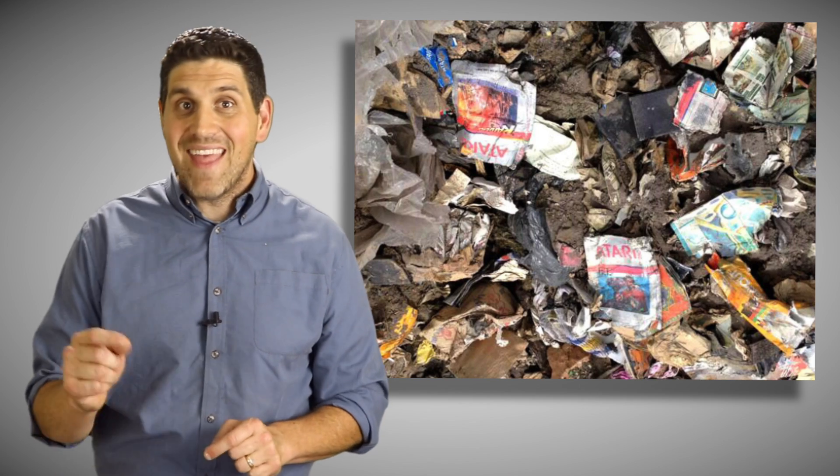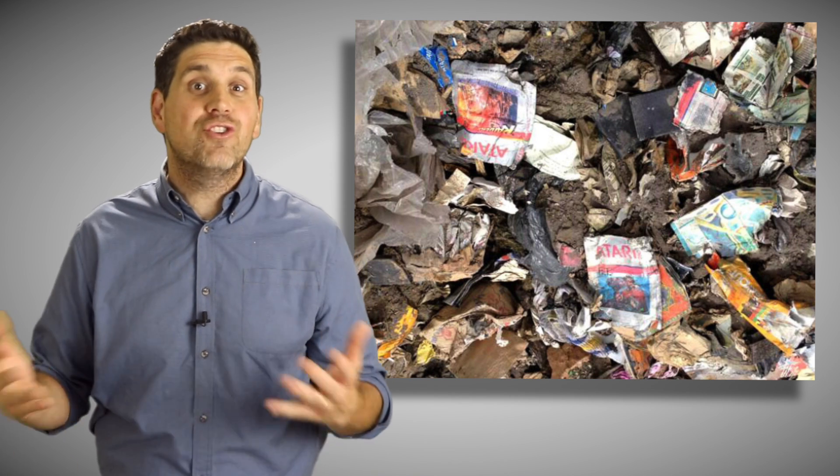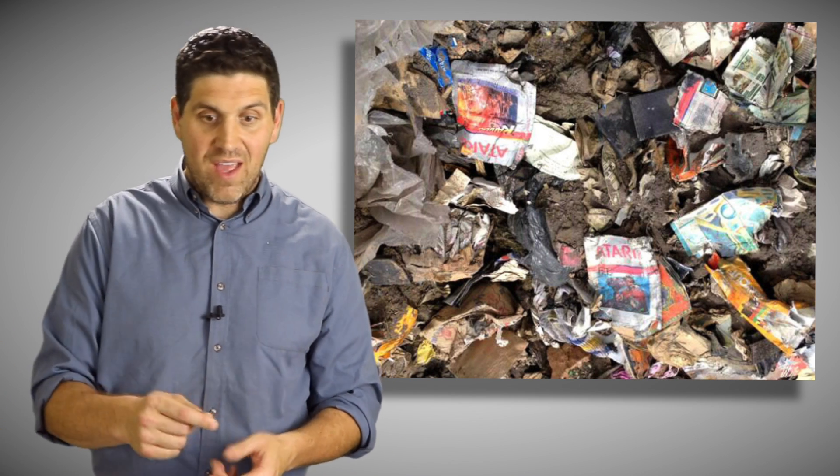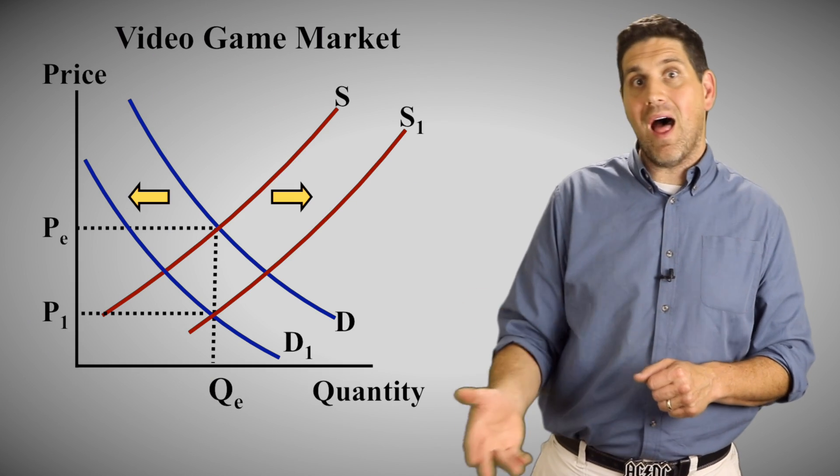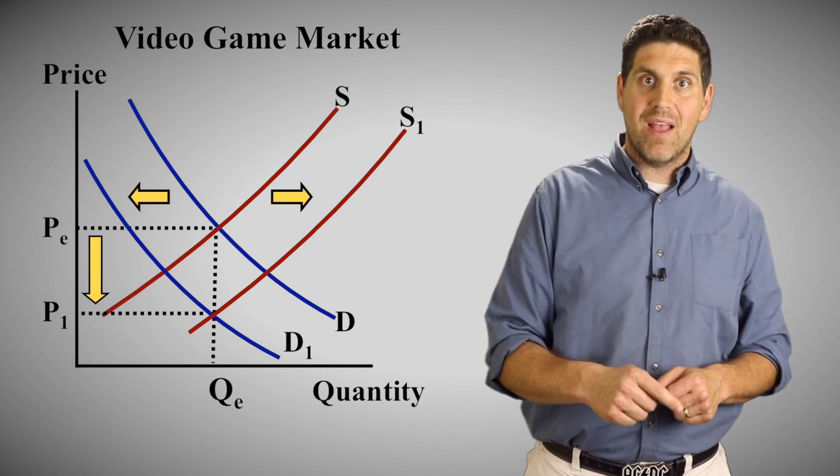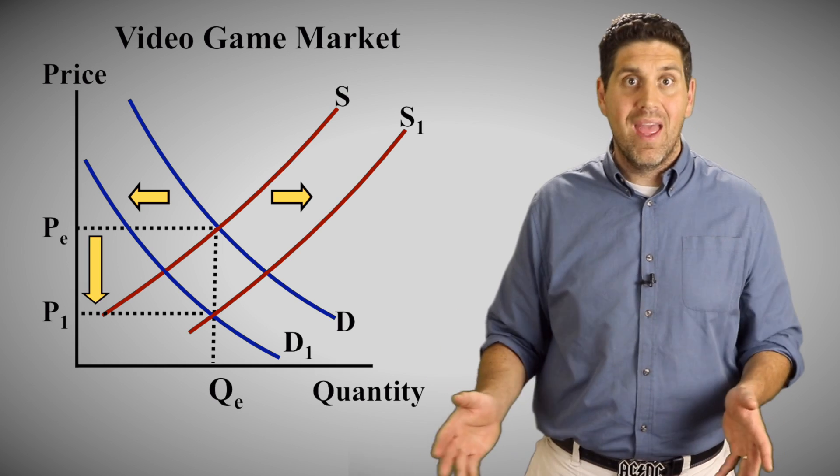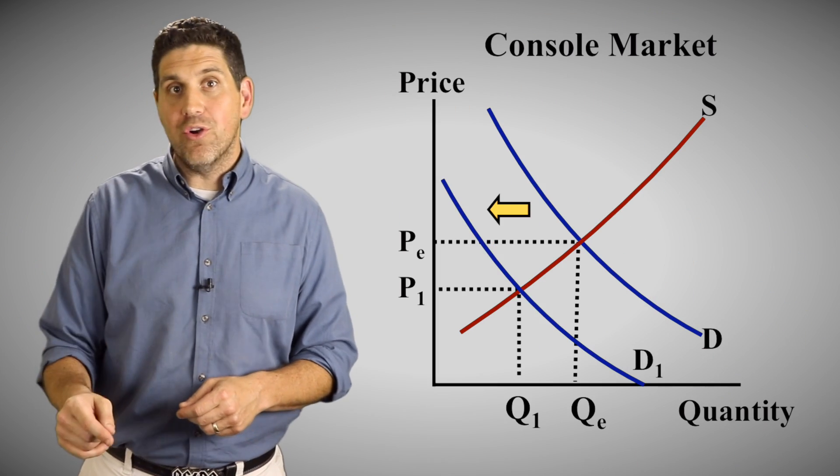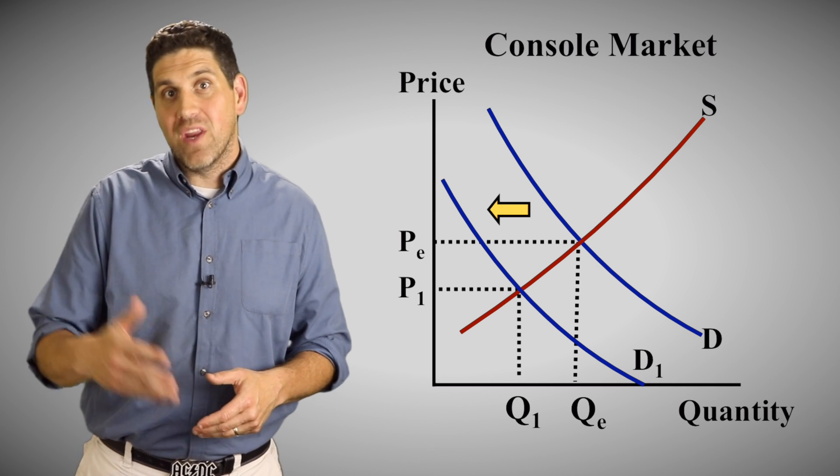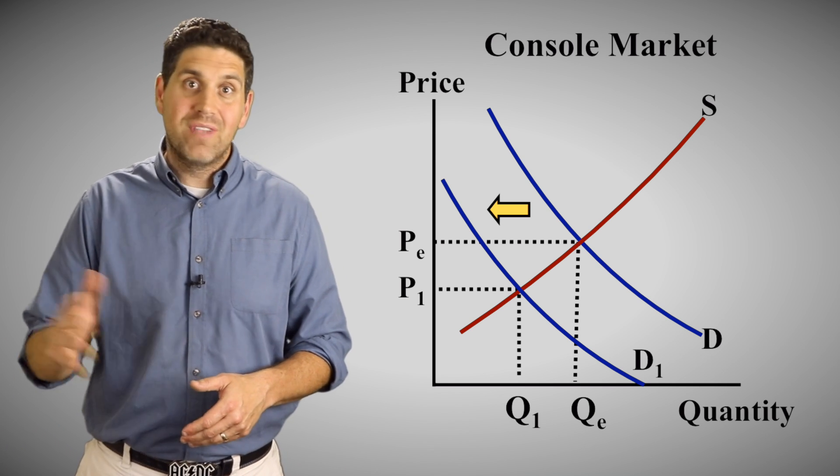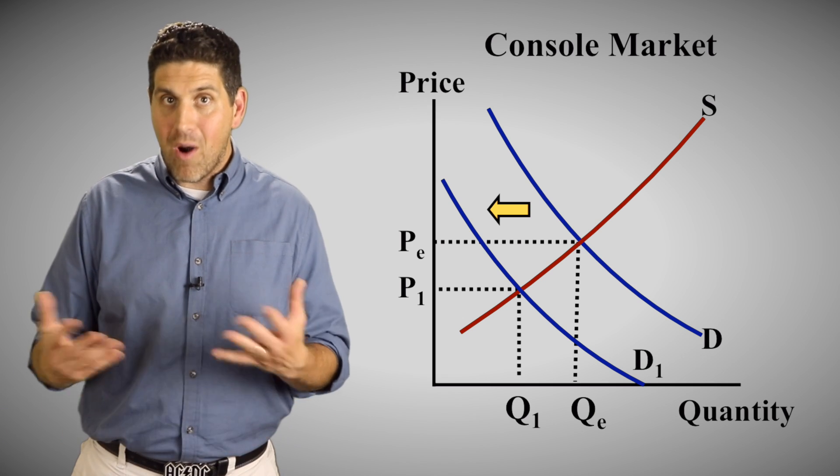Now, of course, the developers thought they were going to make a bunch of profits since the movie was so successful, but customers weren't going for it. There was just no demand. In the end, Atari overproduced hundreds of thousands of games and had to bury the unsold games in a landfill in New Mexico. So the market for video games saw an increase in supply and a decrease in demand, so the price of video games just tumbled. At the same time, home computers were getting cheaper, and so people started to buy home computers as opposed to video game consoles. So the demand goes down for the video game consoles. The market is in trouble.